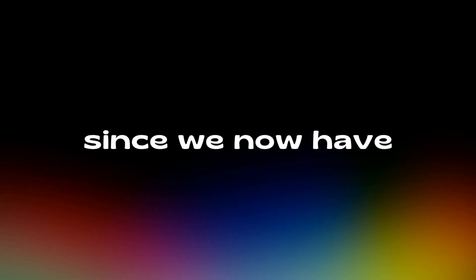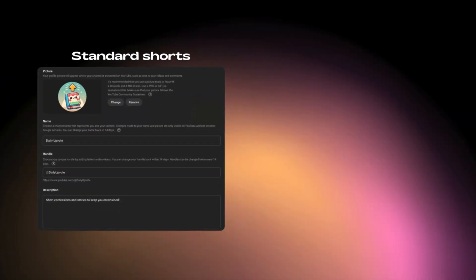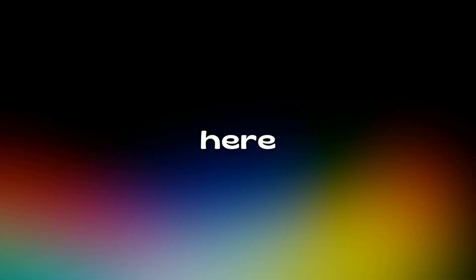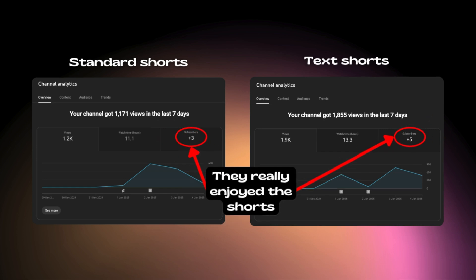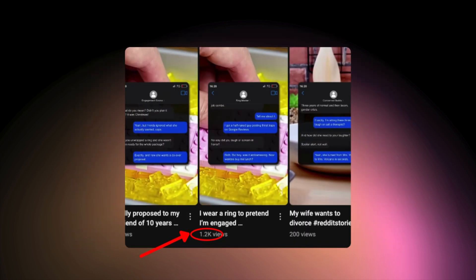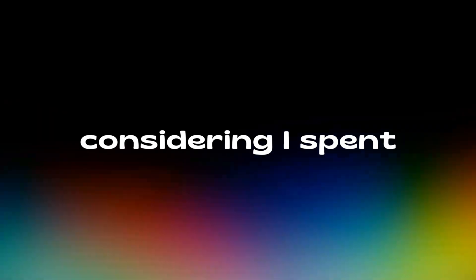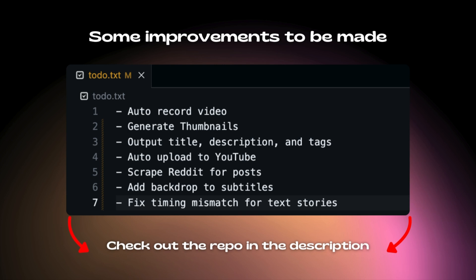Since we now have two niches, I created two channels — one for standard shorts and another for text shorts. I uploaded a couple of videos to both channels and here are the results. Both channels got 1,000 views in just two days, which isn't changing any lives, but it's still cool to see. This video in particular did really well. Not bad considering I spent basically no time at all to get this content. There's still a lot I could improve, and if you'd like to contribute, the GitHub repo links are in the description.